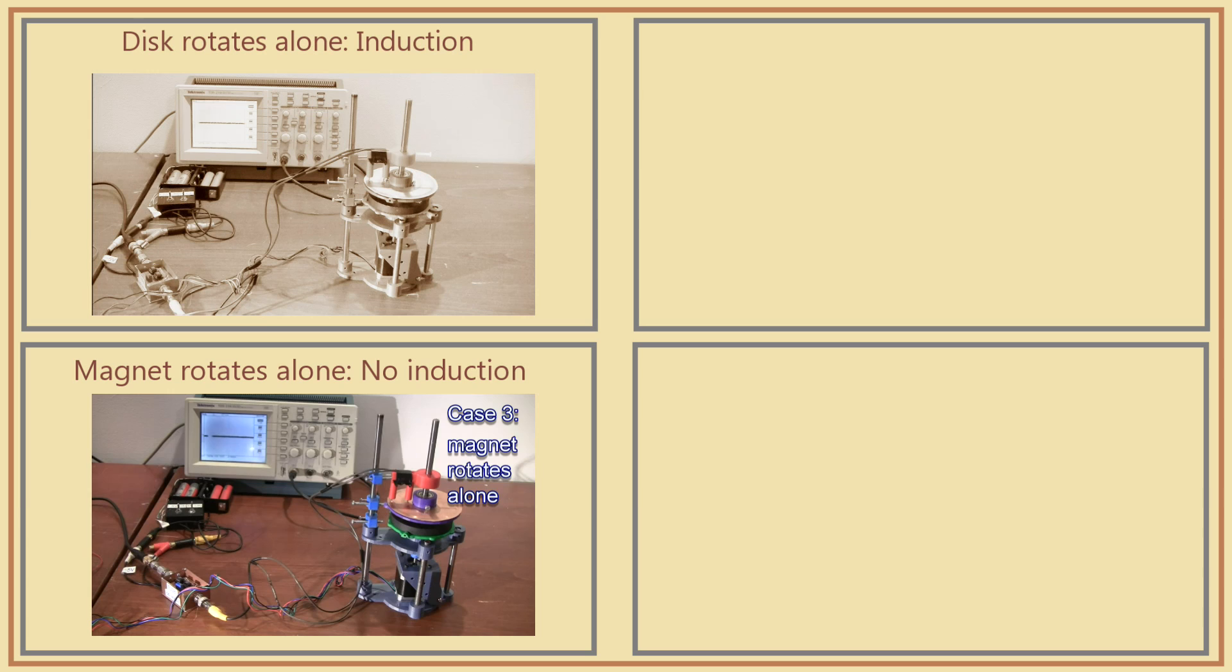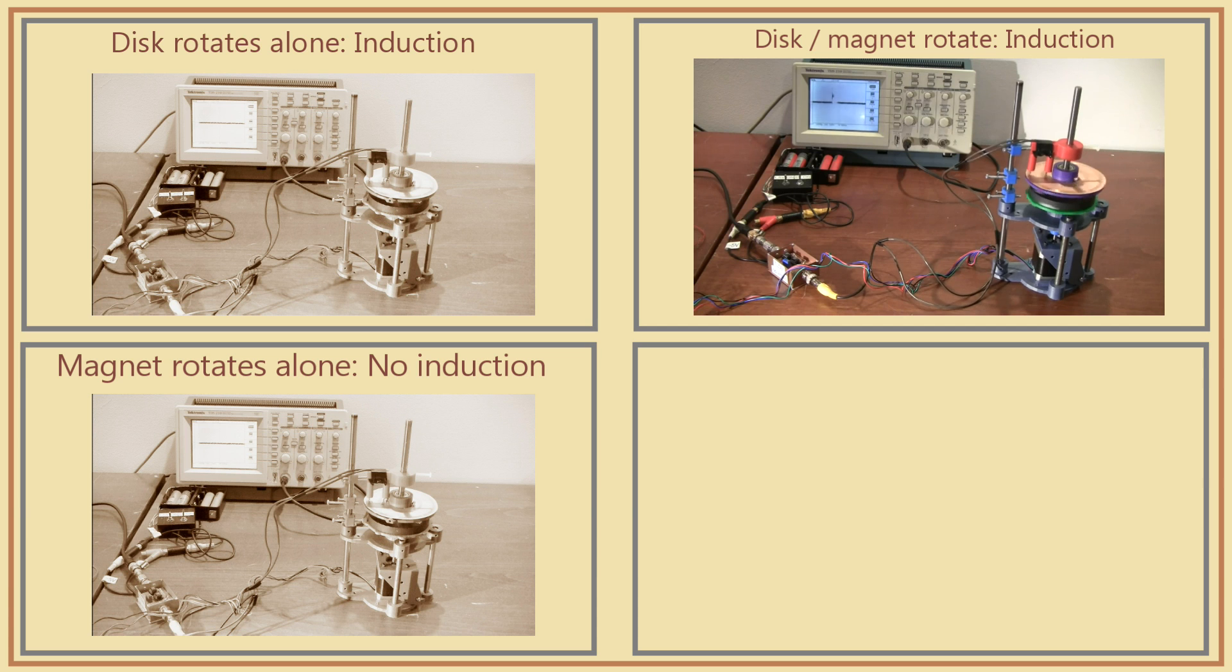The first we tried was rotating the disk alone. Then in the second, we rotated the magnet alone. In the third scenario, we rotated the magnet and the disk together. And in the fourth, we rotated the stator alone.